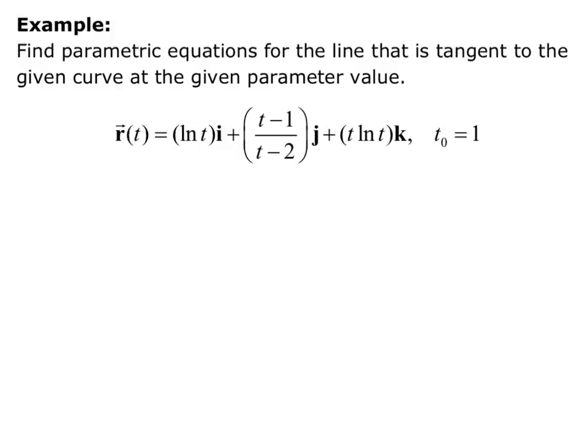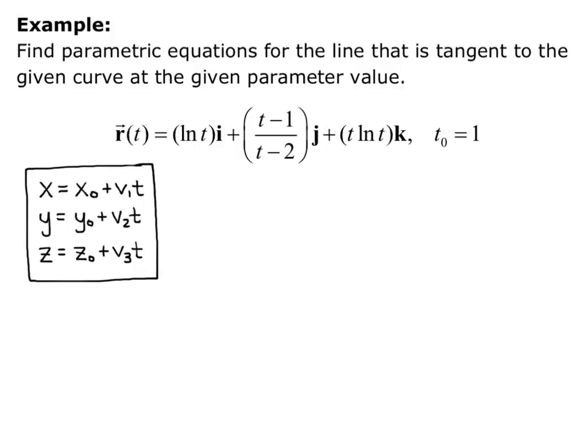Alright, let's find parametric equations for the line that is tangent to the given curve at the given parameter value. r of t equals natural log of t i plus quantity t minus 1 divided by quantity t minus 2 j, plus t times natural log of t k, at the point t₀ equals 1. So recall we're looking for x equals x₀ plus v₁ t, y equals y₀ plus v₂ t, and z equals z₀ plus v₃ t, where the x₀, y₀, z₀ come from r of t₀, and the v₁, v₂, v₃ come from the velocity, v of t₀.